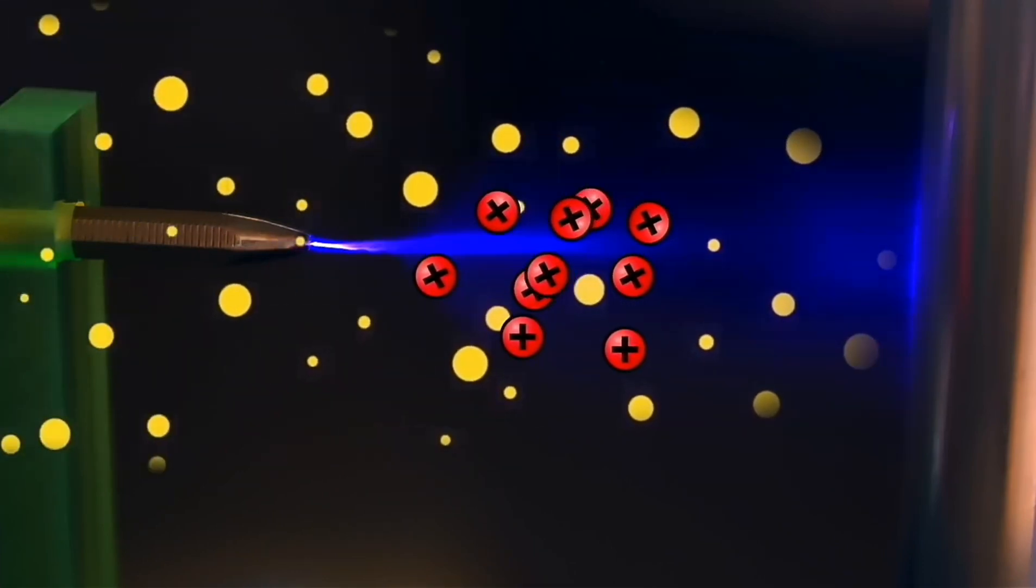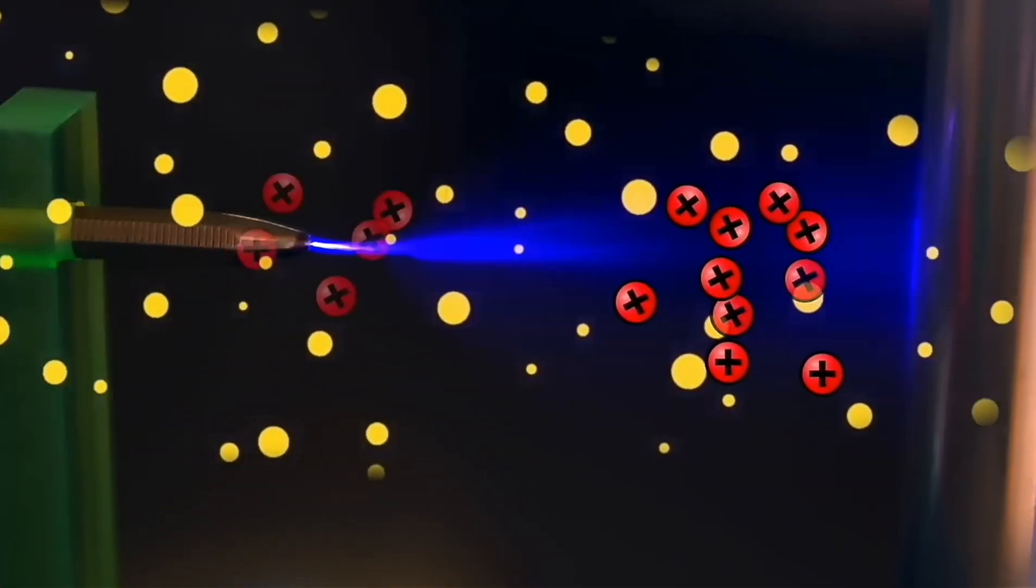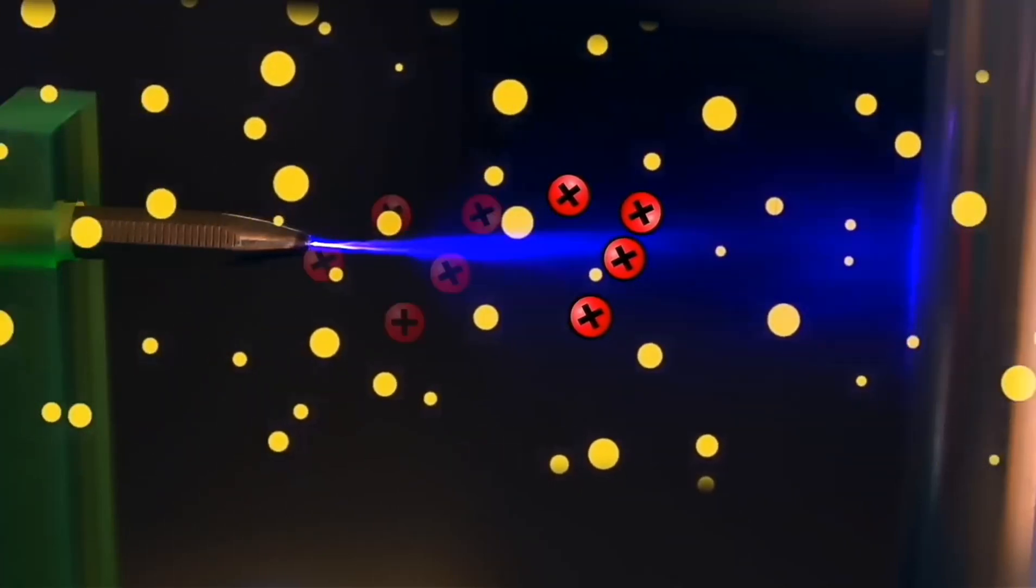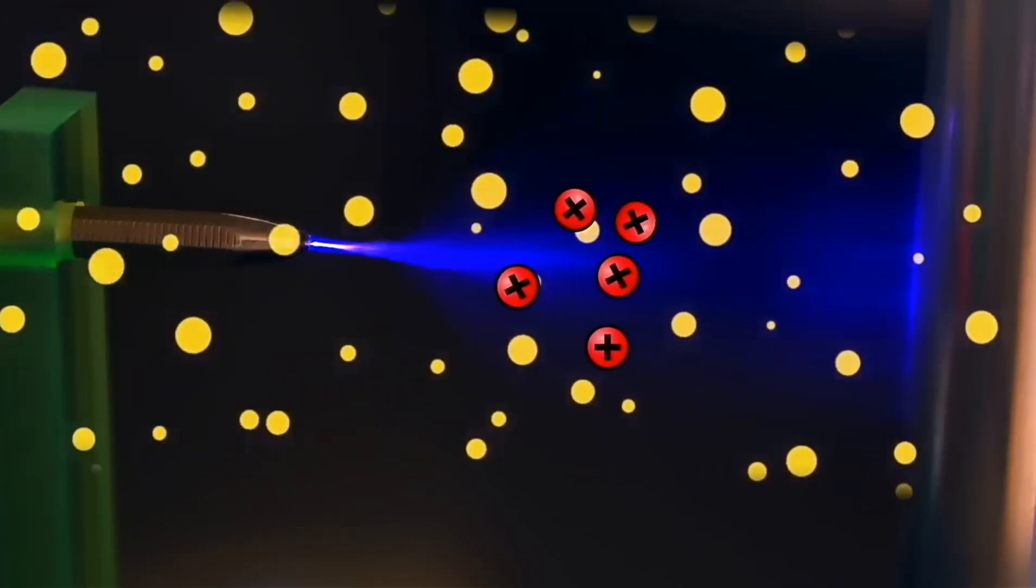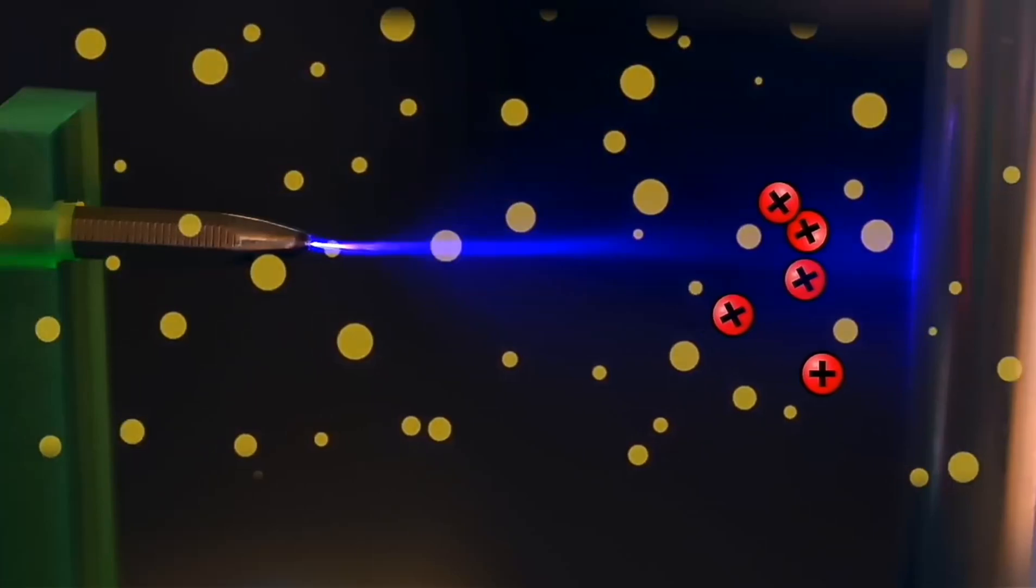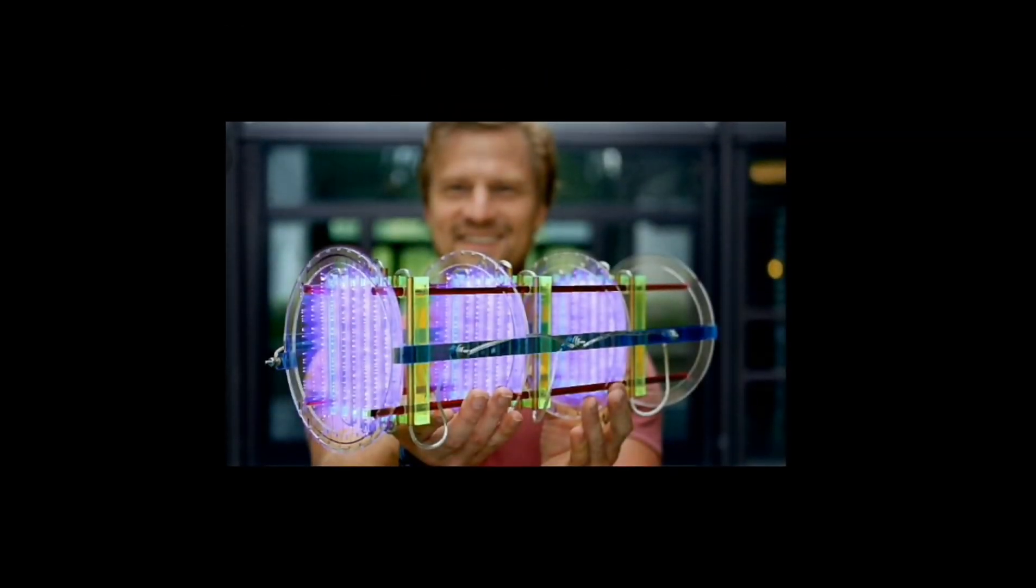As the ionized air molecules travel to the negative electrodes, they collide with millions of other air molecules, propelling the aircraft forward. That is how this plane worked, but if you don't get it, you should also look at this video.